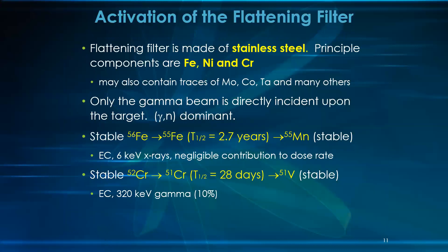The flattening filter is actually made of stainless steel, with principal components of iron, nickel, and chromium, plus traces of molybdenum, cobalt, tantalum, and others. Only the gamma beam is directly incident on the filter — no electrons — so the photon-neutron process is the dominant mechanism. Stable Fe-56 is converted to Fe-55 with a half-life of 2.7 years, resulting in a quite negligible dose rate.